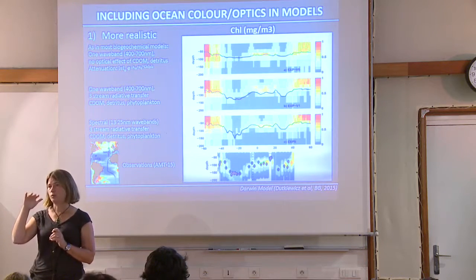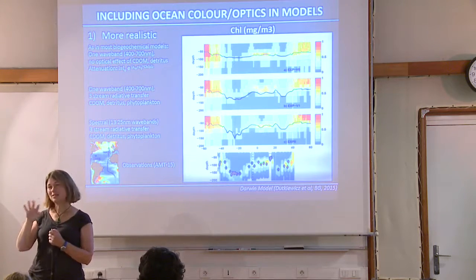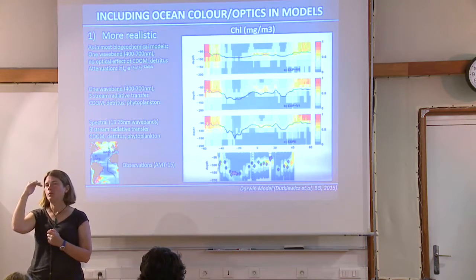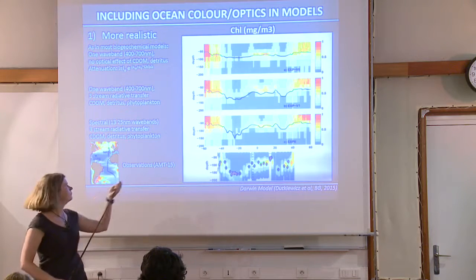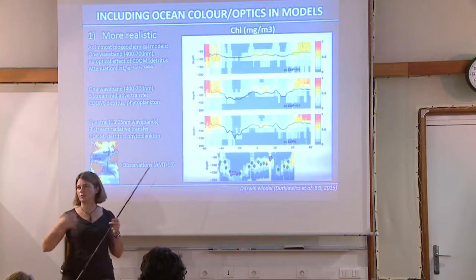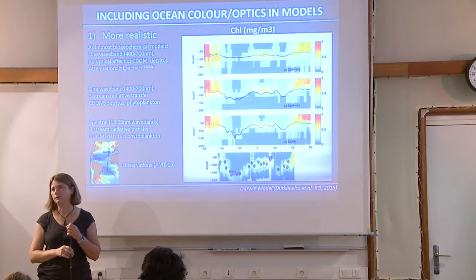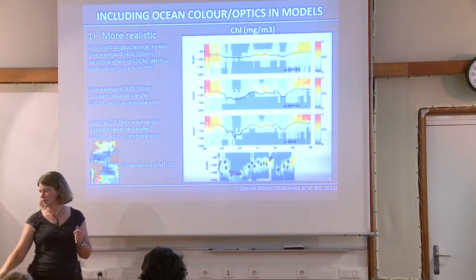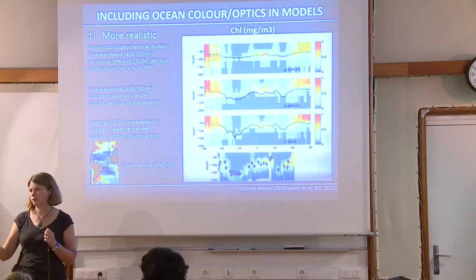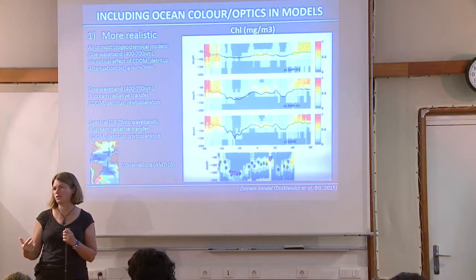I initialize all phytoplankton with similar biomasses as a function of depth — it doesn't really matter how I initialize them, the results usually come out the same. I let them decide where they want to grow. Usually about two to three years is enough time to stabilize. This is a fairly coarse resolution model — one degree — and I can run 10 years overnight. As soon as I go to finer resolution, the one the pretty movies are made of, it still takes two years but might take a month to run.